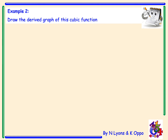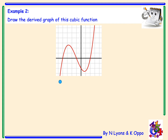Example 2: Draw the derived graph of this cubic function. There are no x-values or turning point labels on it — it doesn't matter, we're just looking at the shape. Analysing the gradient from left to right: I have a positive gradient, the function is increasing. The gradient goes to zero at a maximum turning point. The gradient becomes negative — the function decreases. Then I have a minimum turning point where the gradient equals zero, and then the function increases again with a positive gradient.